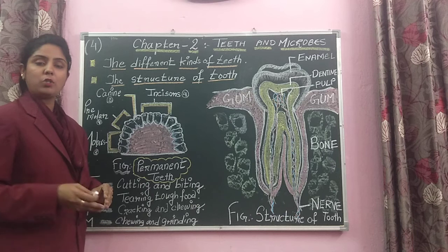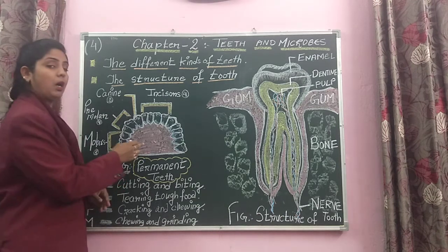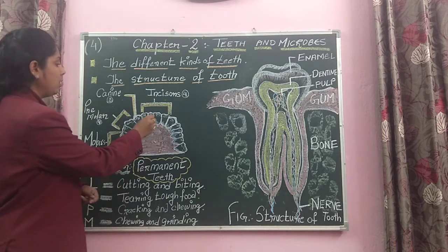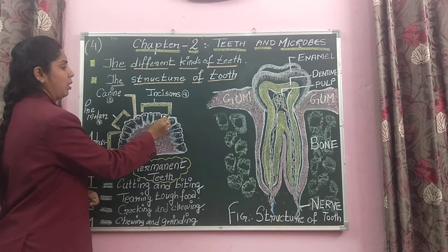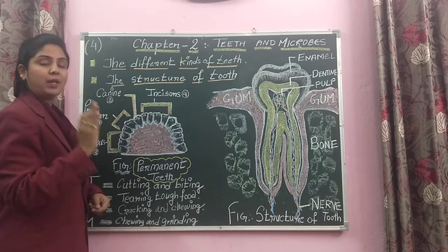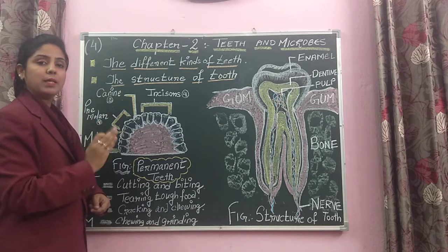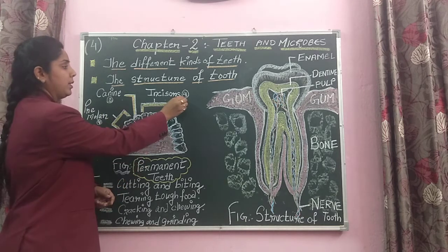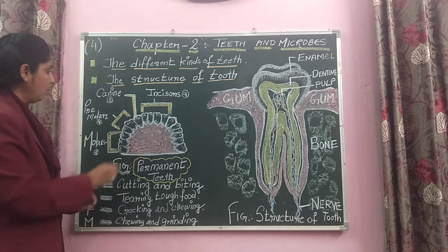There are 16 permanent teeth in the upper jaw and 16 in the lower jaw. Looking at the upper jaw, you can see 4 incisors — the 4 front teeth in the upper jaw are known as incisors. In total, there are 8 incisors.